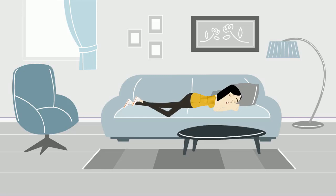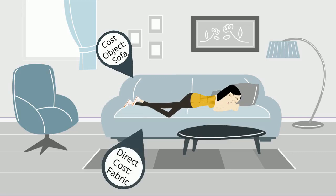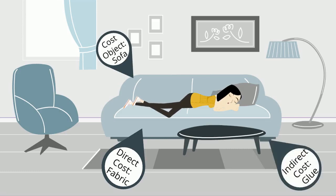Let's assume we work for a furniture company — the Snuggly Sofa Company. They make and sell chairs, sofas, and tables. We want to determine the cost to make a sofa, so our cost object is a sofa. One of the costs to make a sofa is the amount of fabric used to cover it — this is a direct cost, since we know how much fabric goes into making each sofa. Another cost is wood glue; we nail the frame together and then use a dab of glue here and there for additional reinforcement. It is not easy to track how much glue we use on each sofa, so this is an indirect cost.